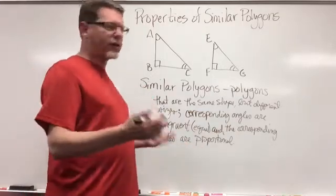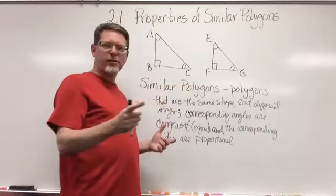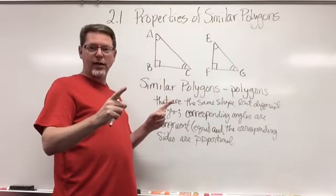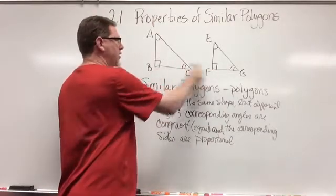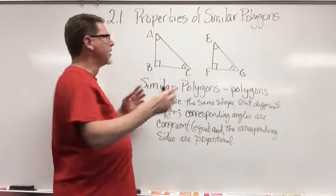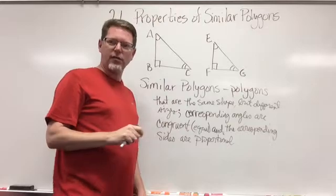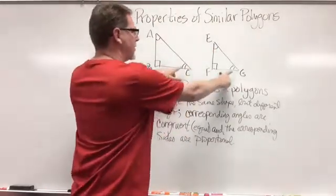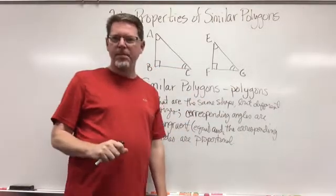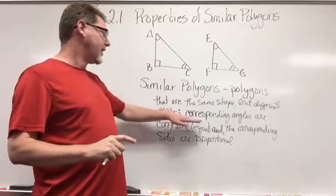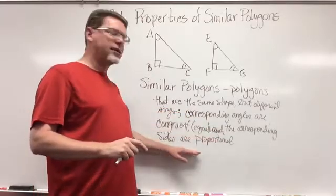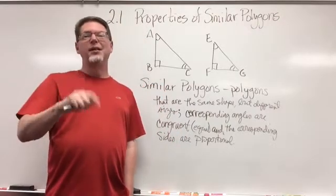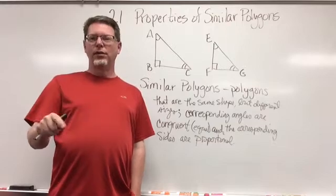Corresponding angles — angle B and angle F — are corresponding because they're one angle from each polygon in the same position, identified by the box showing 90 degrees. Angles A and E are also corresponding, identified by one loop. Angle C and G are corresponding, identified by two loops. It's important you understand this definition: corresponding angles are congruent and corresponding sides are proportional, because we'll use that proportional part to find missing sides.